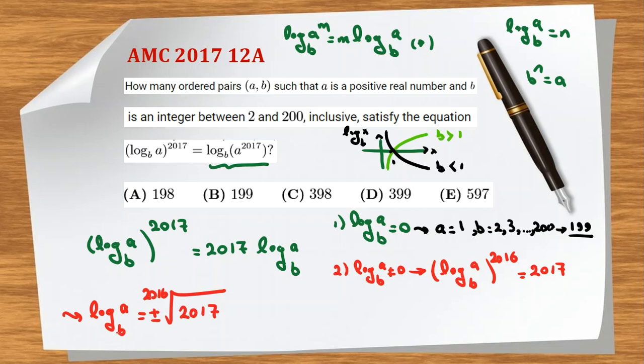By definition of logarithm, b^(±√[2016](2017)) = a. For example, b can be 2, and a is always positive because it's b to the power of something and b is positive. So for b=2 we have two answers for a, for b=3 we have two answers, and so on.